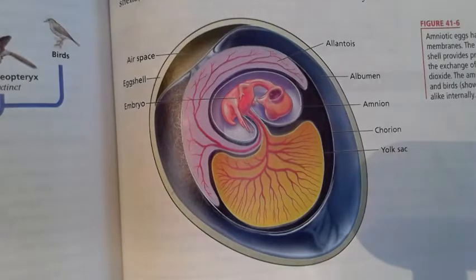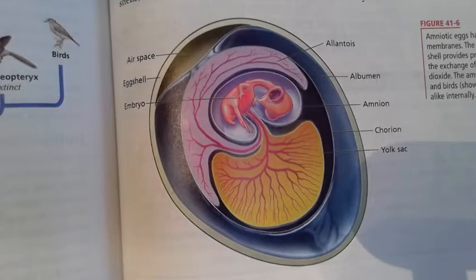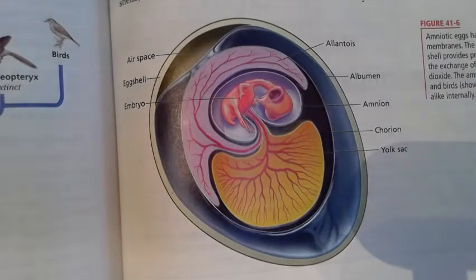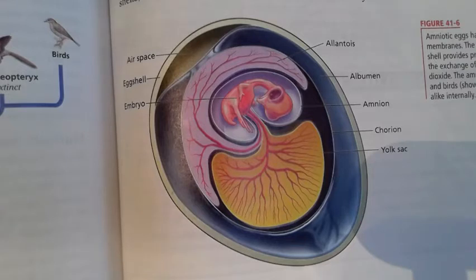Okay, part two. We have a picture here of an amniotic egg. This is a type of egg that is only found in reptiles, birds, and our egg-laying mammals like the echidna and the duck-billed platypus. What makes these kinds of eggs different is that they are watertight — they don't need to be laid in water like a fish egg or a frog egg. They have either a hard or a leathery shell that creates a self-contained moist environment for the embryo to develop.